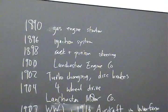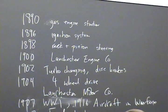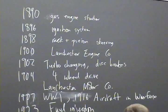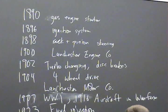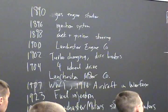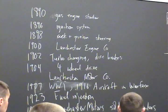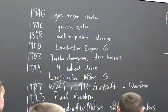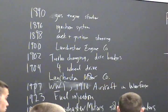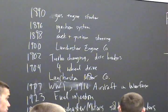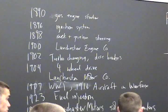He developed a lot of the theory of airplane flight back then. To get started, he first developed the starter, then the ignition system. Rack and pinion steering with his brother George. He formed the Lanchester Engine Company, and then they developed the first British car before 1900. And then 1902, turbocharging, disc brakes, he developed those. Four-wheel drive.